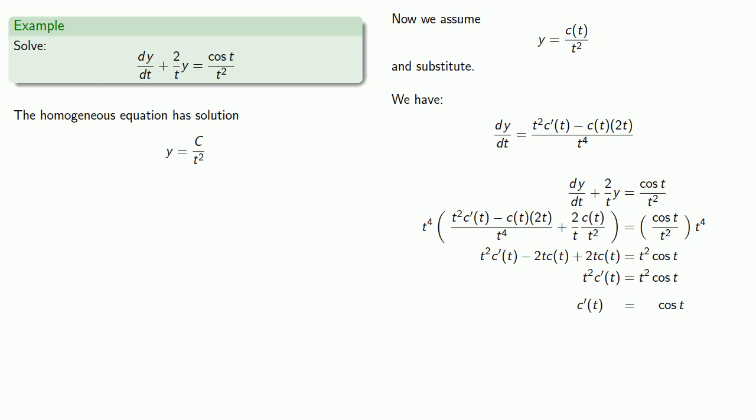But now, since I know c'(t) solely as a function of t, I can anti-differentiate to find c(t). And so I find that c(t) is sin(t) plus, don't forget that constant of anti-differentiation.